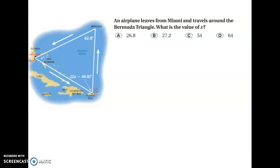Well, an airplane leaves Miami and travels around the Bermuda Triangle. What is the value of X? So, really, we're just asking, what is that degree of measure there? So, is that A, B, C, or D? Pause the video. Do the work. See you in a second.